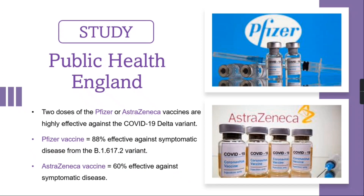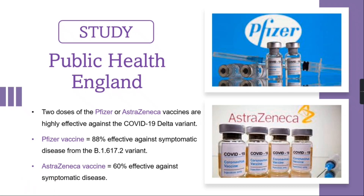There is also good news from a study conducted by Public Health England. They studied two vaccines — Pfizer and AstraZeneca — and found that both are highly effective against the COVID-19 Delta variant. It was found that the Pfizer vaccine is 88% effective against the Delta variant, whereas the AstraZeneca vaccine is 60% effective against the disease caused by the Delta variant. This paper was published to the public by Public Health England.